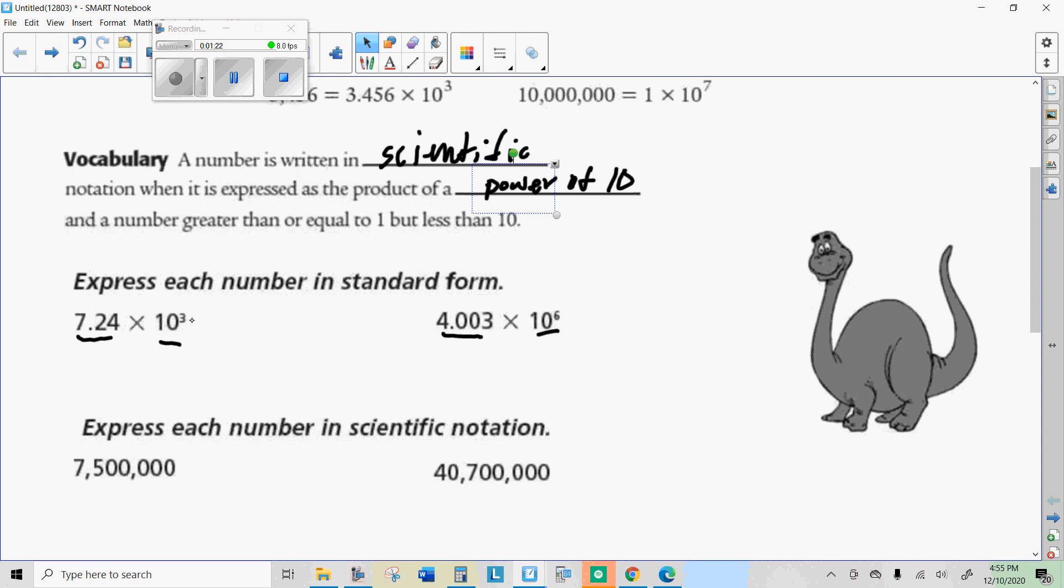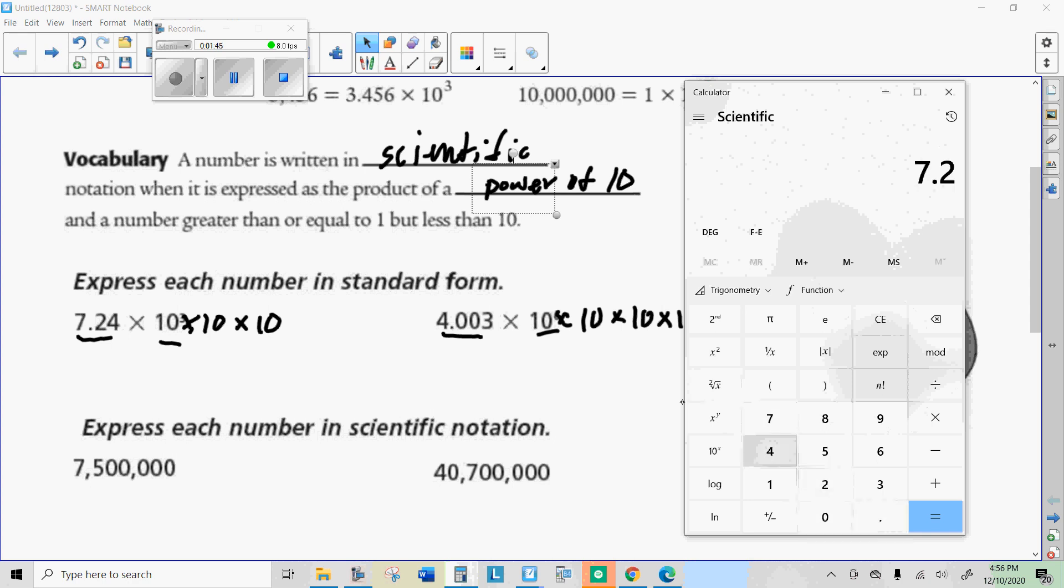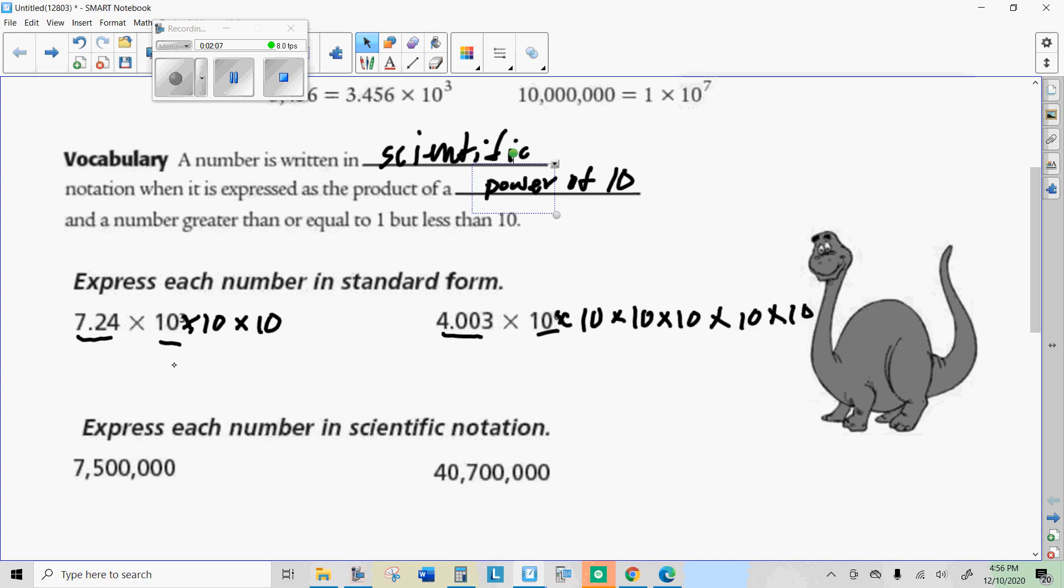Now, to put them in standard form, you could think about expanding this, so multiplying by 10 three times. But you'll notice, after you do this a few times, something happening with the decimal. Every time you multiply by 10, starting with 7.24, you should notice that the decimal moves over one place. Now we have to do that one more time, the decimal moved over one more. And the third time the decimal moved over one more, I have to put in a filler 0 to get 7,240.